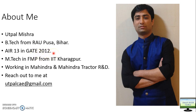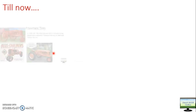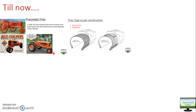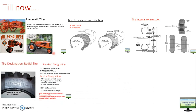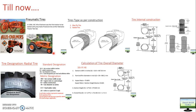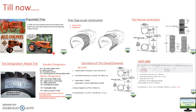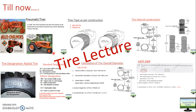Till now we have seen about tires. My first video was the introduction of tires, beginning from the steel tire, then to the pneumatic tire. Then we saw types of tires on the basis of tread pattern, then bias ply tire and radial tire, the differences between them, internal construction of tire, aspect ratio, section height, overall diameter, deflection, tire designation, and how to calculate overall diameter of a tire with solved examples.